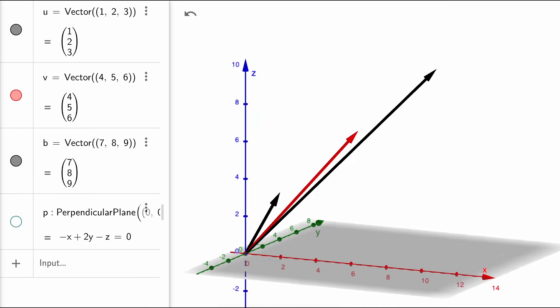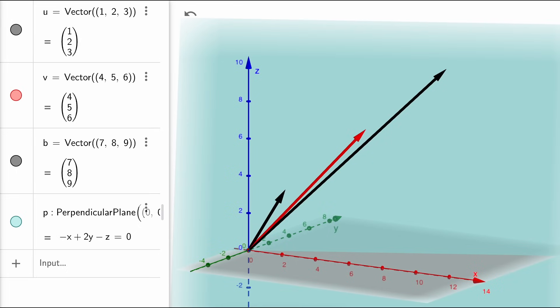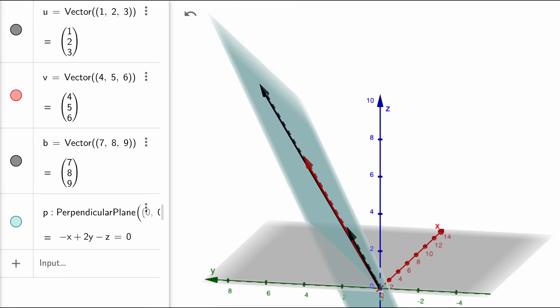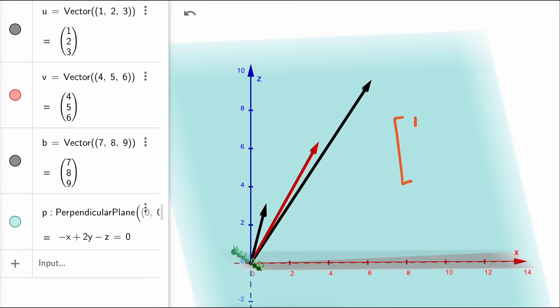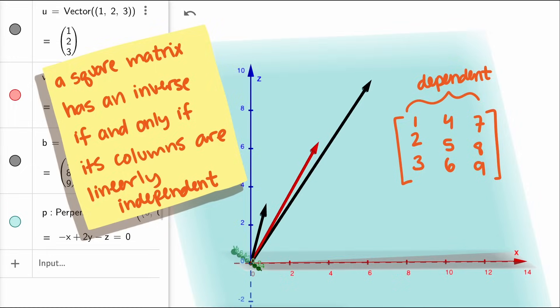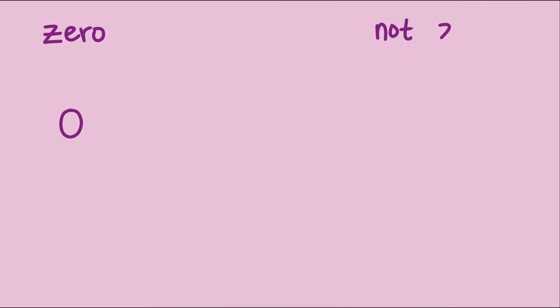Well, not necessarily. If we look at the span of the three columns of the matrix, we only get a plane through three dimensions. That means that no matter what vector we multiply with this matrix, the resulting vector will always be in this plane. The problem is that the columns of this matrix are not an independent set. And that's the key. A square matrix has an inverse if and only if its columns are linearly independent. If they're not, like in this case, then no inverse exists.